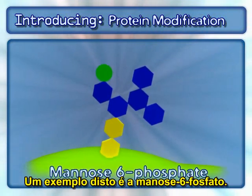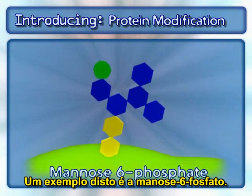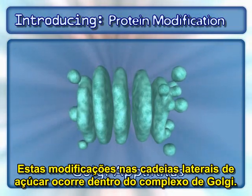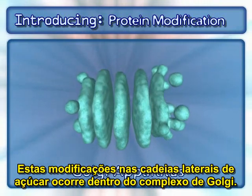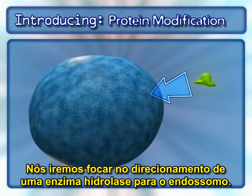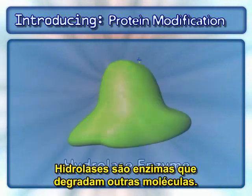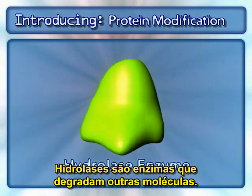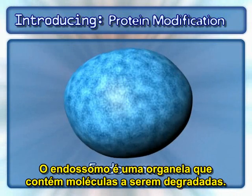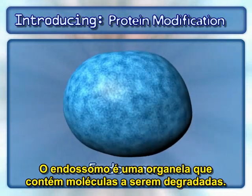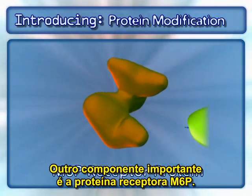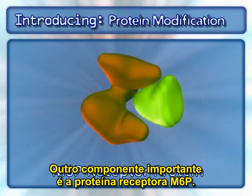One example of this is mannose-6-phosphate. These sugar side-chain modifications occur within the Golgi apparatus. We focus here on the delivery of a hydrolase enzyme to the endosome. Hydrolases are enzymes that degrade other molecules. The endosome is an organelle that contains molecules to be degraded. Other key components include the M6P receptor protein.